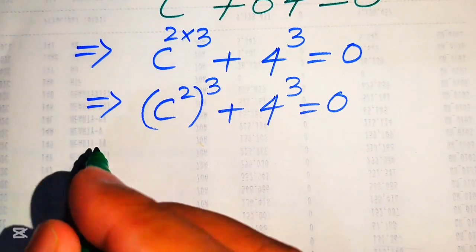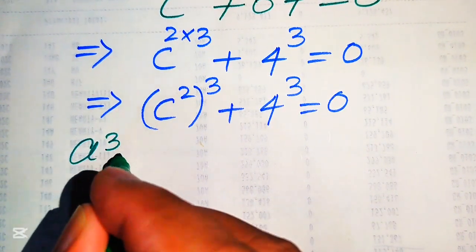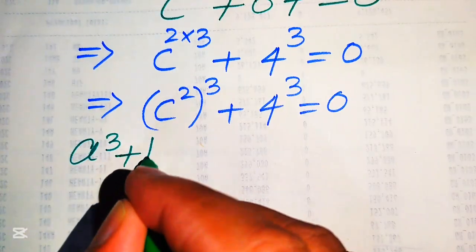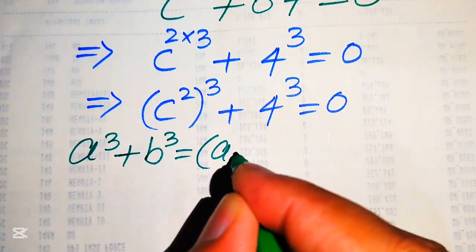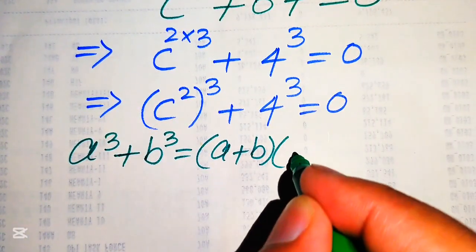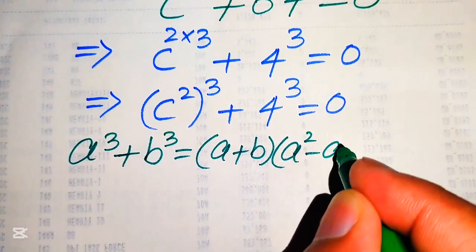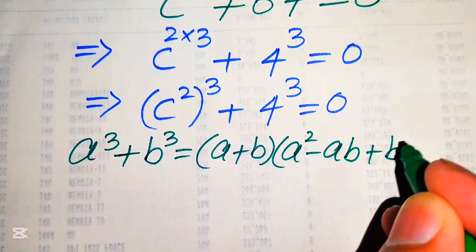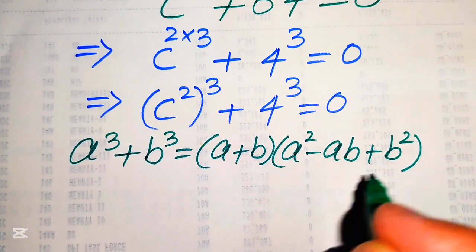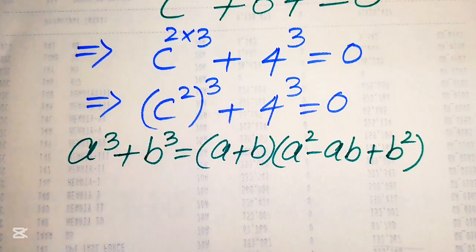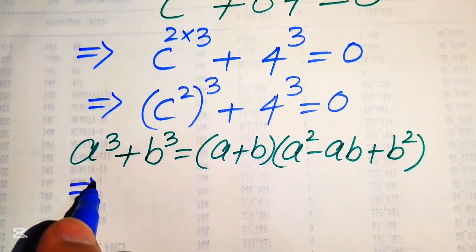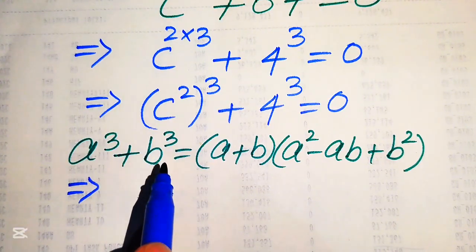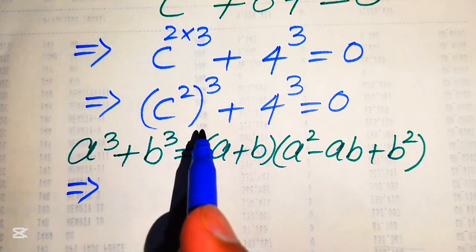Now we apply the sum of cubes formula: a³ + b³ = (a + b)(a² - ab + b²). We use this formula to factor our equation.